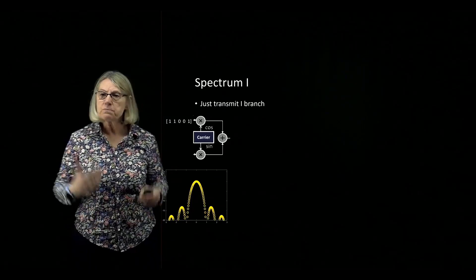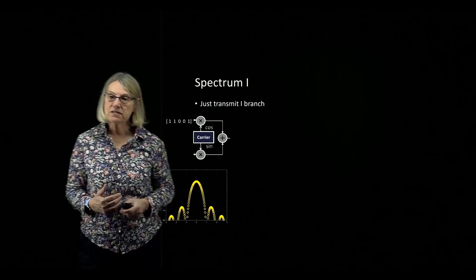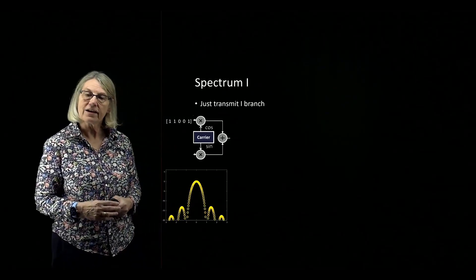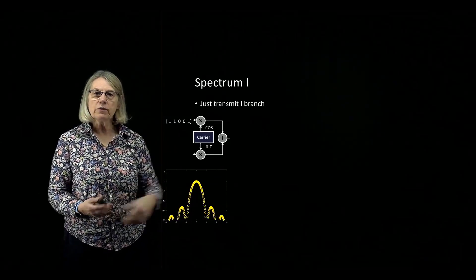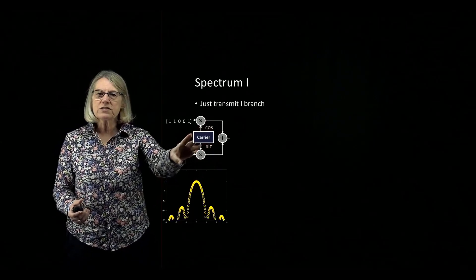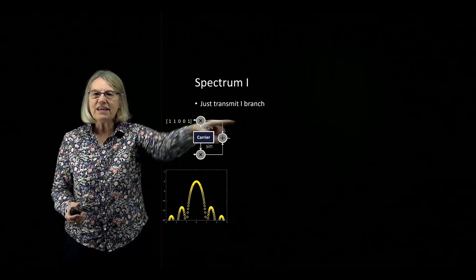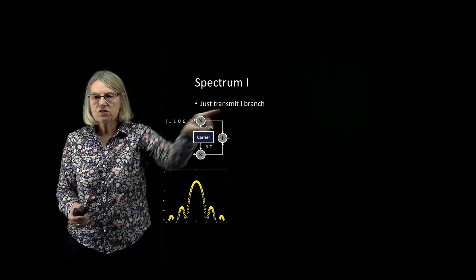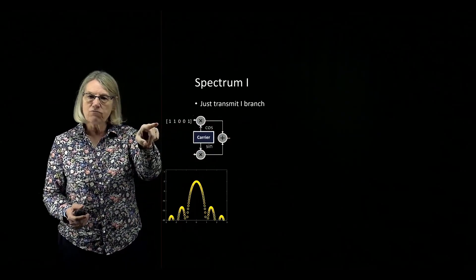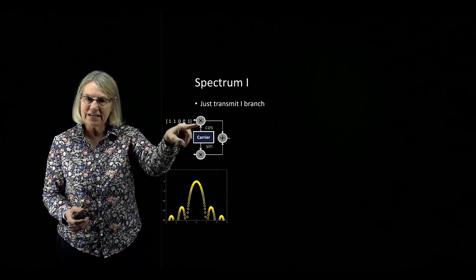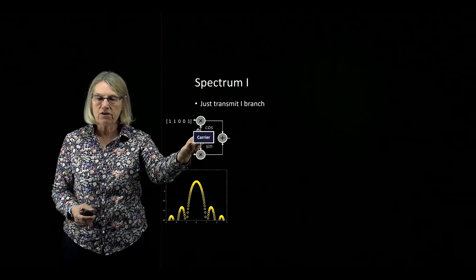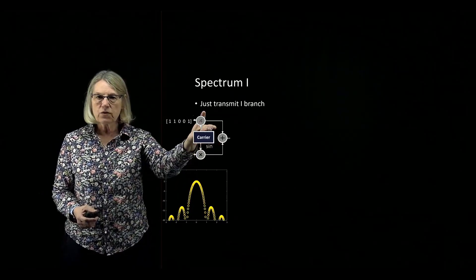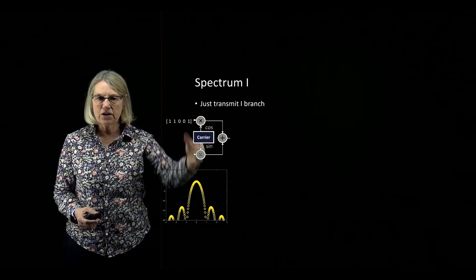We're going to look at the spectral aspects of what's going on in our transmitter, and we're going to think about what's going on in the I branch. In the I branch, I have one of my data streams going in, and a carrier that will modulate onto the cosine.